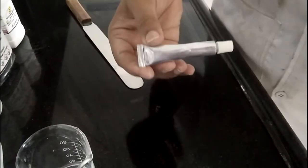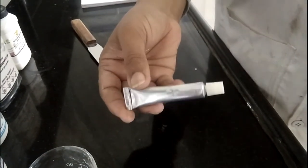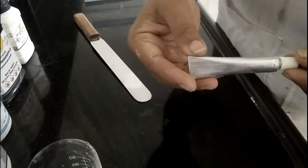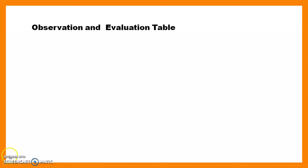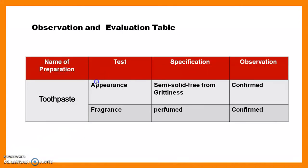This is our test toothpaste filled into the container. The observation and evaluation table should contain specifications such as: the name of the preparation, taste, specification, and observation. Toothpaste appearance should be semi-solid and free from grittiness — confirmed. Fragrance: peppermint flavor was added as a perfume. This is how the observation table is maintained.